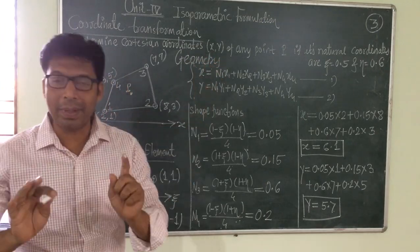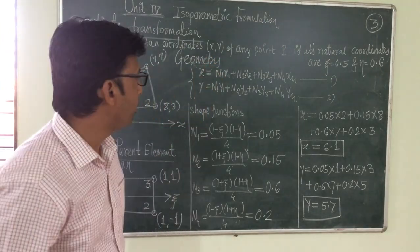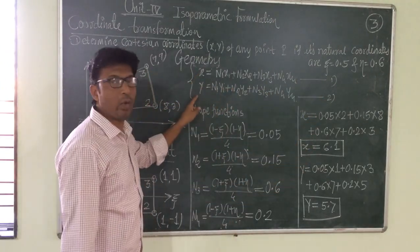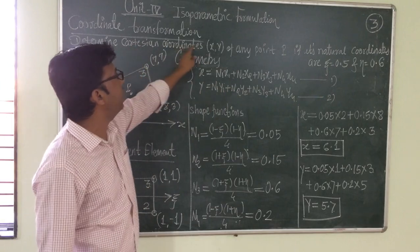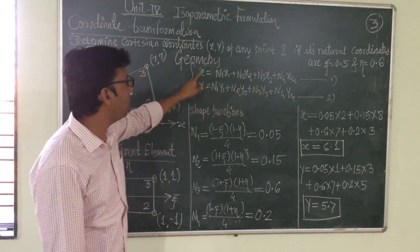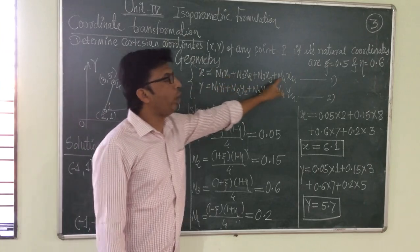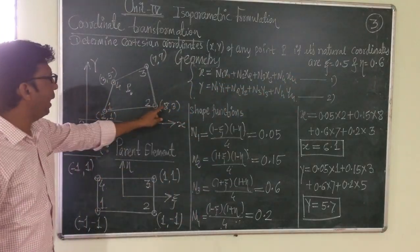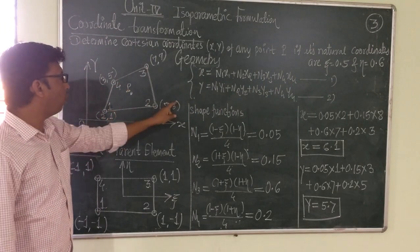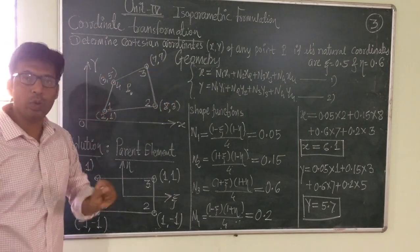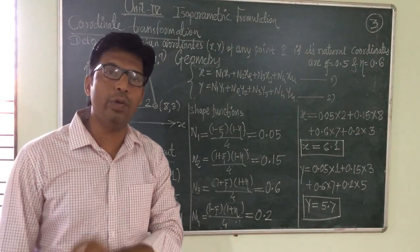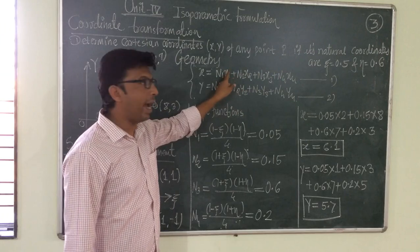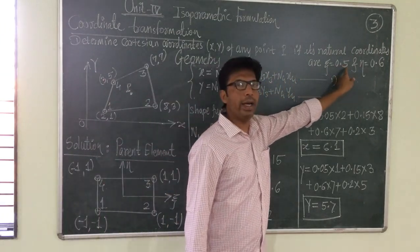In equations 1 and 2, our goal is to determine the Cartesian coordinates x and y of any point P. The nodal Cartesian coordinates x1 to x4 and y1 to y4 are given to us. Our aim is now to find N1 to N4 evaluated at xi equal to 0.5 and eta equal to 0.6, and then substitute into the geometry equations.